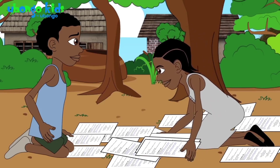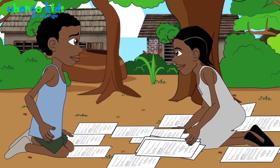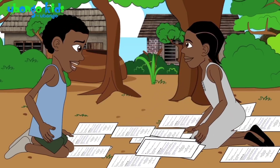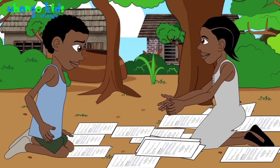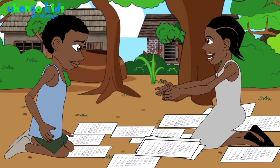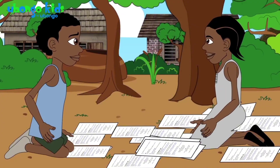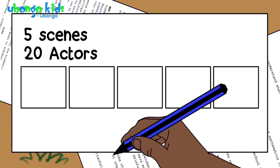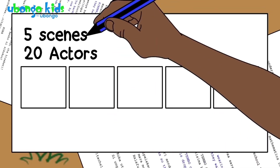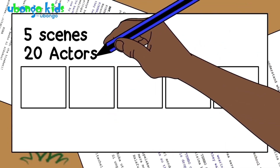How many scenes do you need to shoot? Only five. We can do it, Koba. We just need to use our brains. You have 20 actors and five scenes to shoot, right? Five scenes, 20 actors.